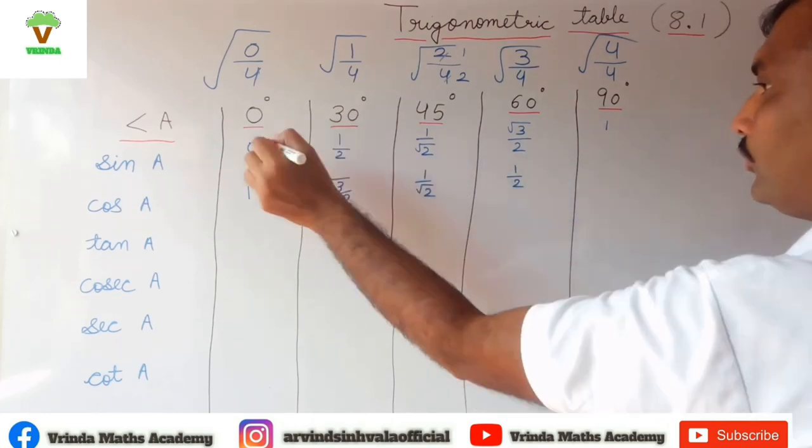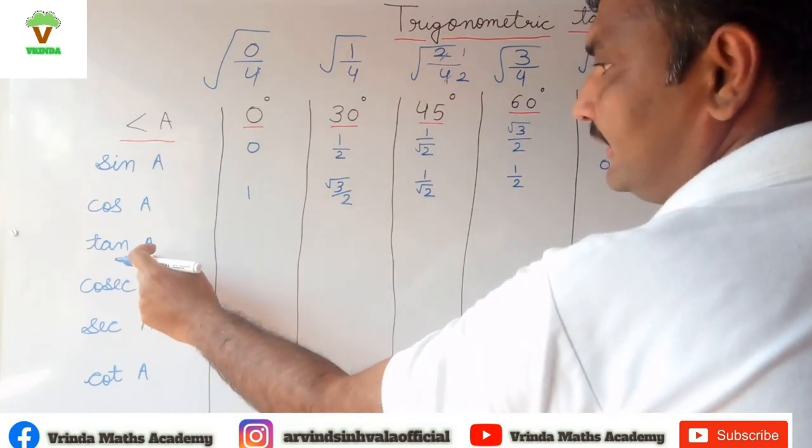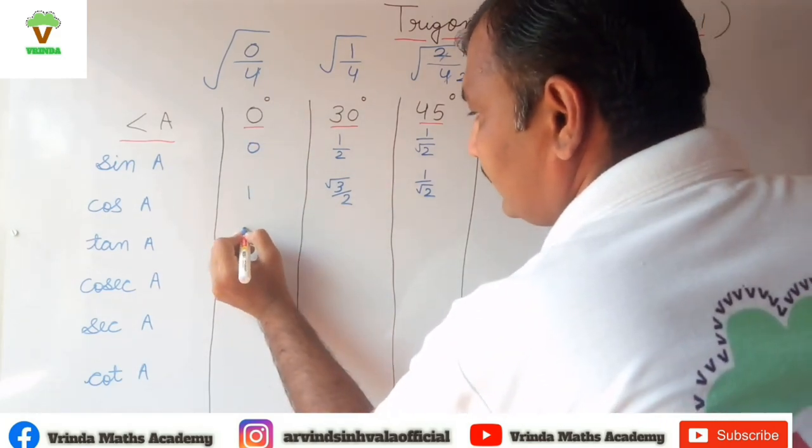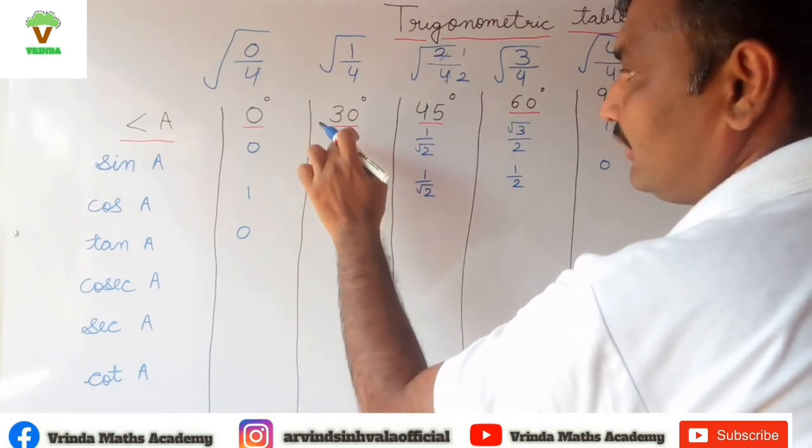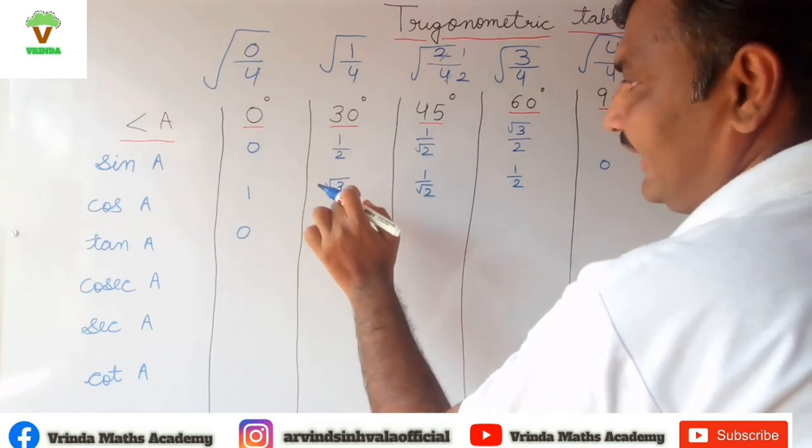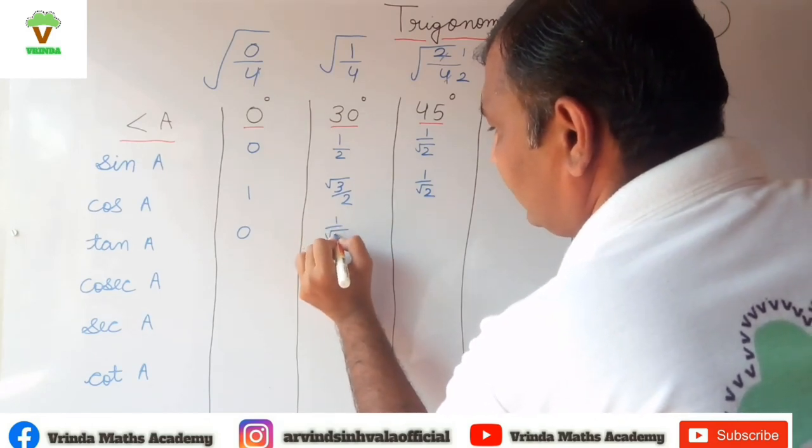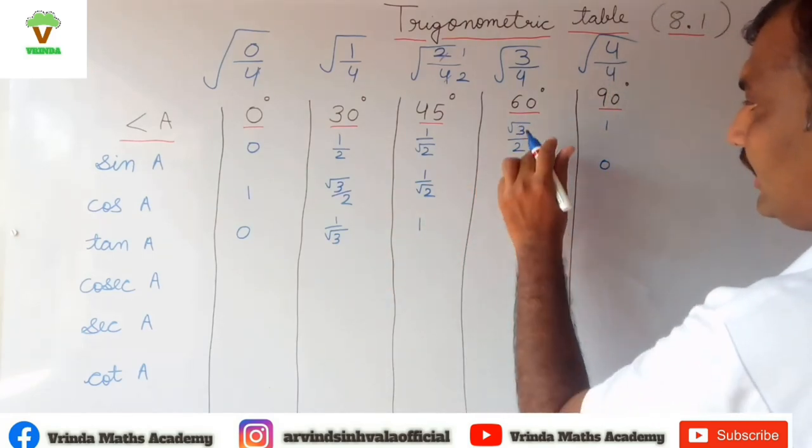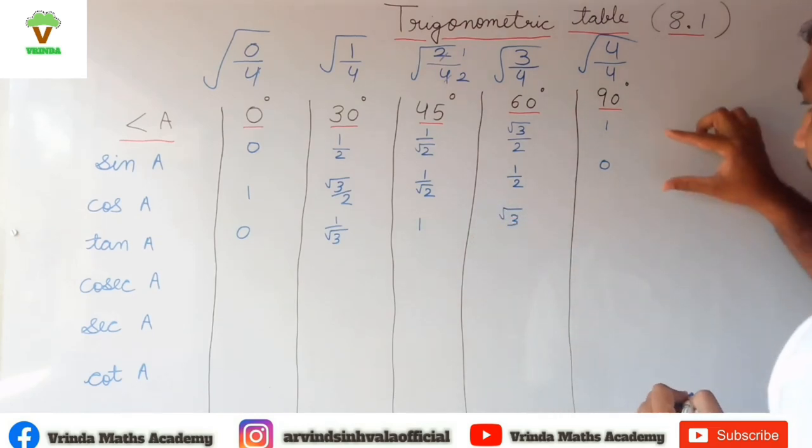Then 1 by 2 and 0. Now tan is equal to sine A upon cos A. So 0 divided by 1 is 0. Here we have to divide 1 by 2 and root 3 by 2, so if I cancel out 2 and 2, 1 upon root 2, 1 upon root 3 will remain. Here also root 2, root 2 cancel out, so 1. Same here, root 2, root 2 cancel out, root 3 upon 1 is root 3. And 1 divided by 0, if we divide any number with 0, it is not defined. So 1 upon 0 is not defined.